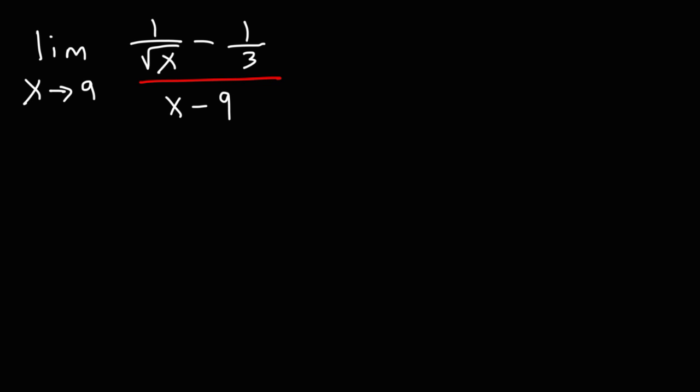How can we evaluate this limit? What is the limit as x approaches 9 for the function 1 over square root x minus 1 over 3, divided by x minus 9?